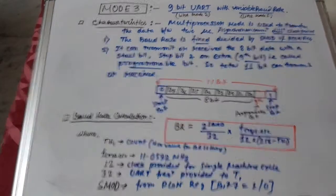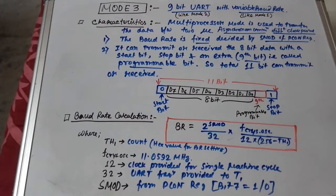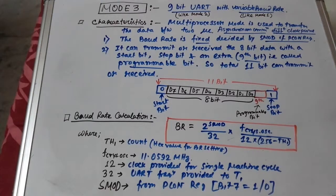Mode 3 combines Mode 1 and Mode 2: it is 9-bit UART with a variable baud rate. The 9-bit data format is like Mode 2, and the variable baud rate is like Mode 1. It supports multiprocessor asynchronous communication, where different clock pulses are provided to the transmitter and receiver.